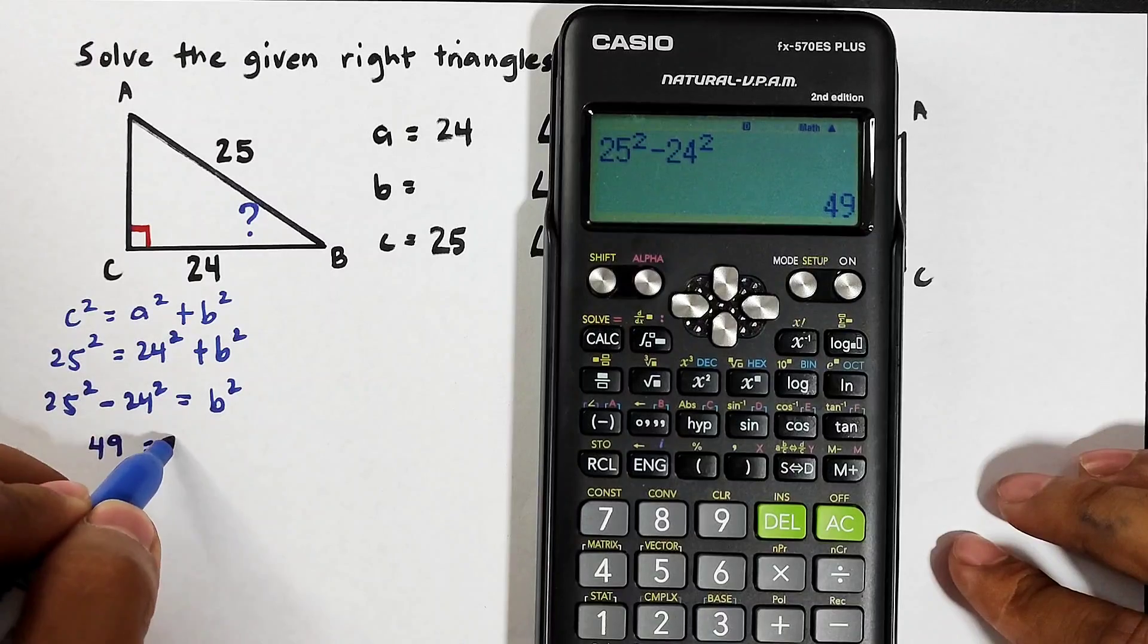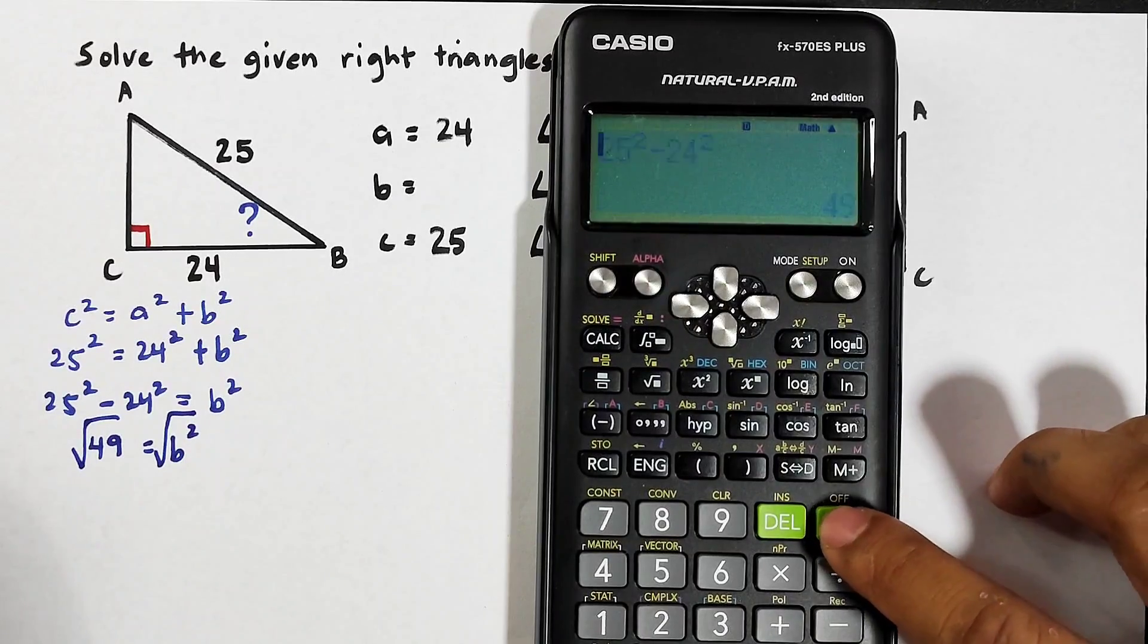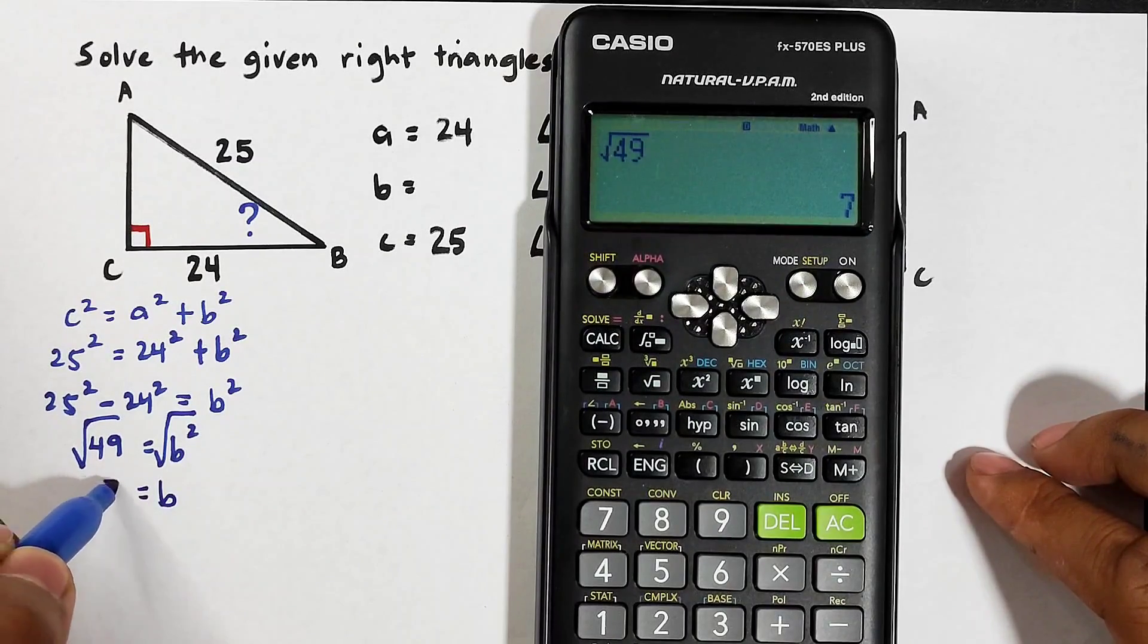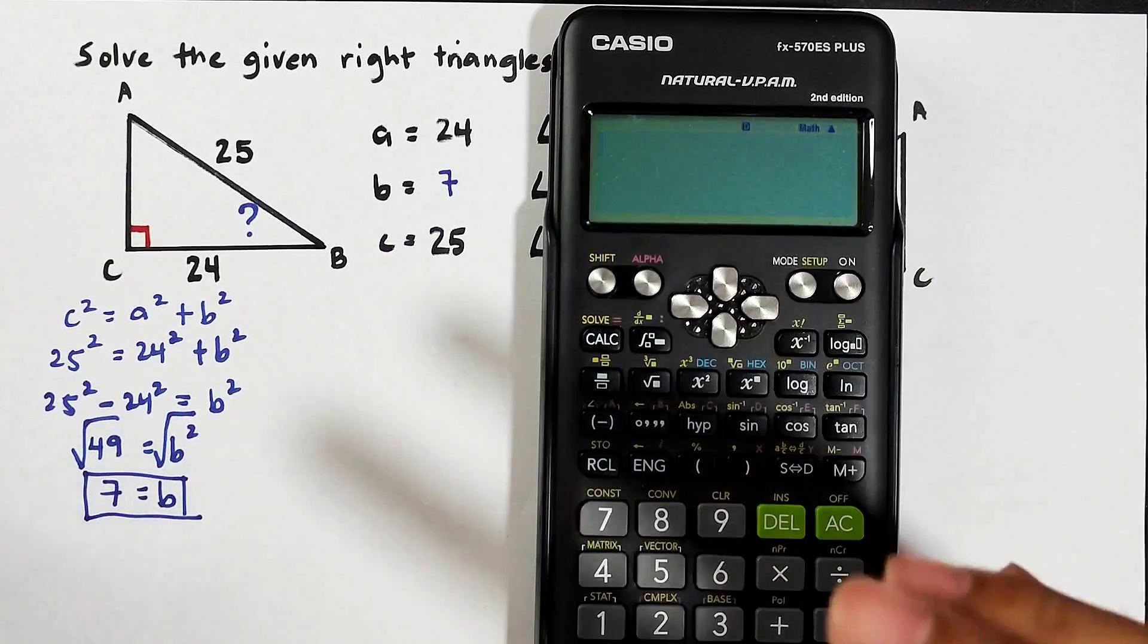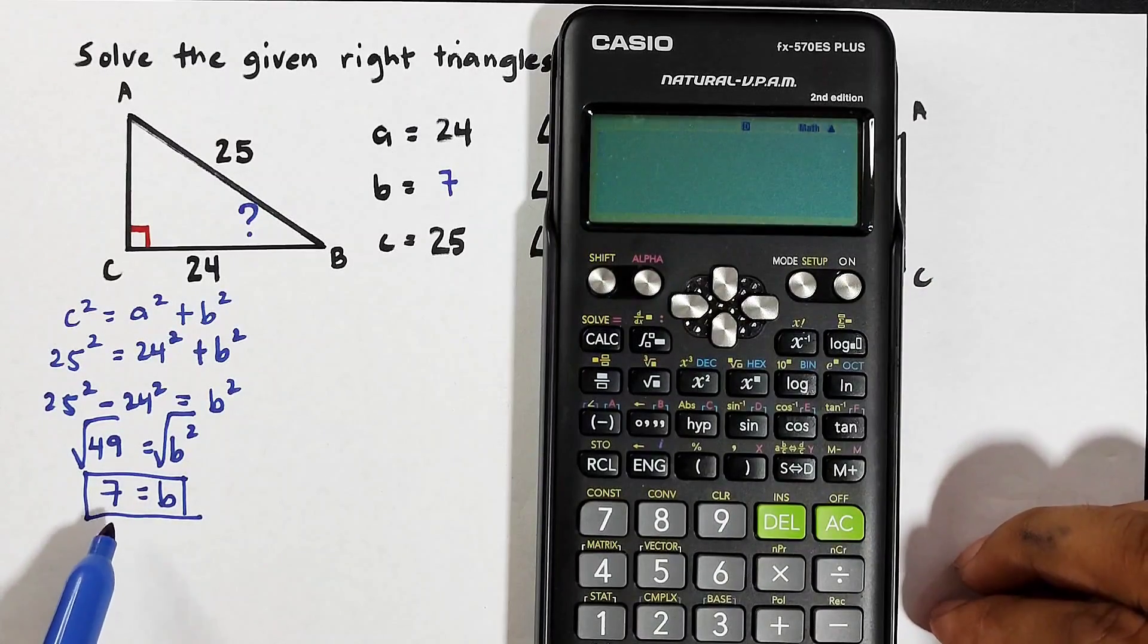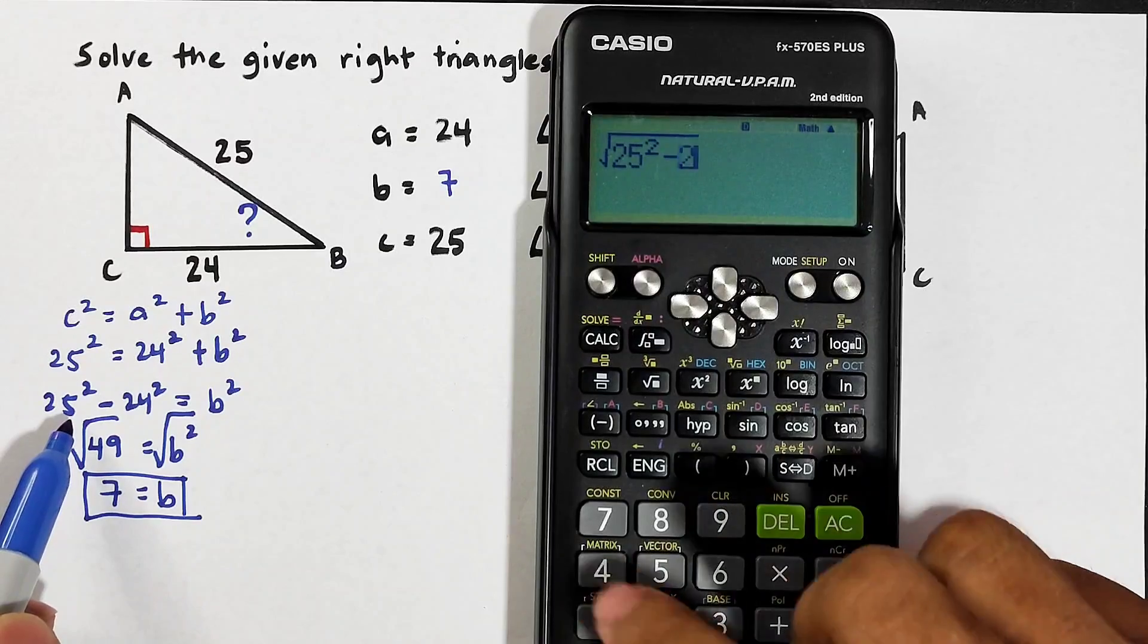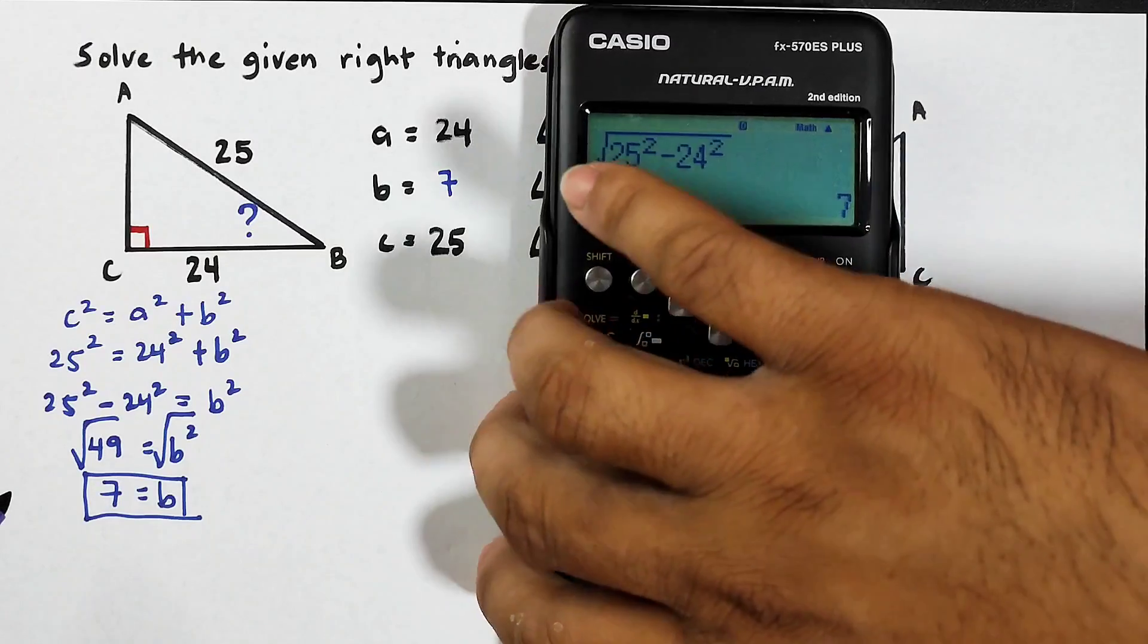And on the other side is b squared. Get the square root. So the square root of 49 is 7, meaning your b is equal to 7. This is 7. Actually we can skip this part and easily get 7. So how? Press the square root, press 25 squared then minus 24 squared and that would be 7. So we are good with the side b.